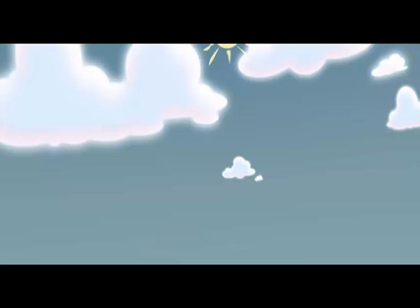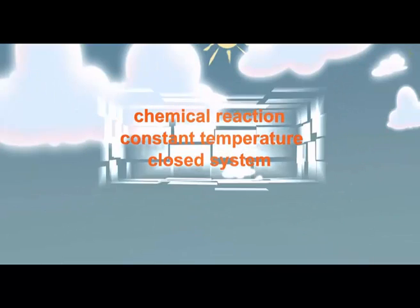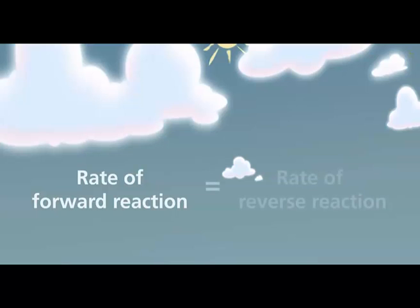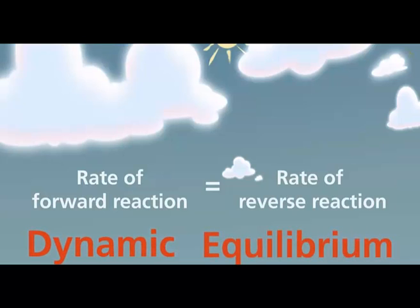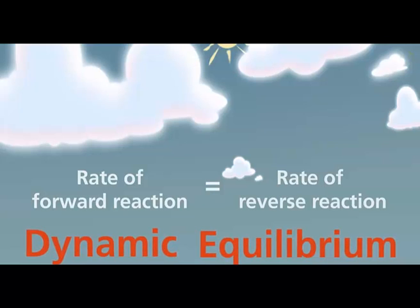This next animation also reinforces the concept of chemical equilibrium and that the concentrations of reactants and products remain fixed or constant once chemical equilibrium is attained. A chemical reaction at constant temperature in a closed system is in a state of dynamic equilibrium when the rate of the forward reaction equals the rate of the reverse reaction. Dynamic means the reaction occurs in both directions; equilibrium means there are constant concentrations of both reactants and products in the system.